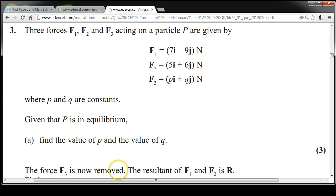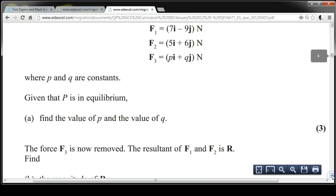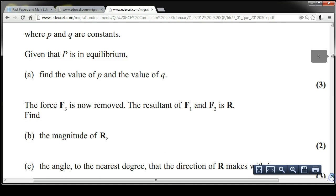The force F3 is now removed. The resultant of F1 and F2 is R. Find the magnitude of R, and the angle to the nearest degree that the direction of R makes with j.